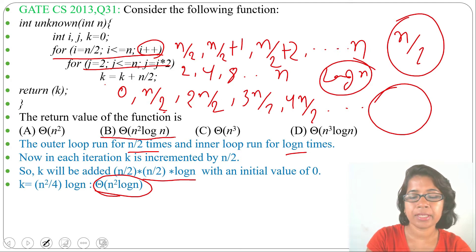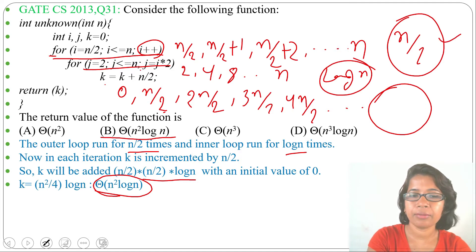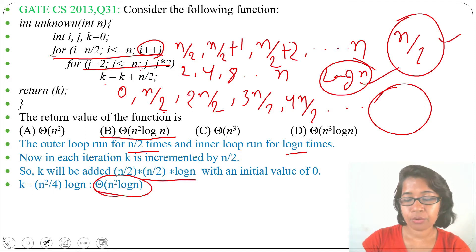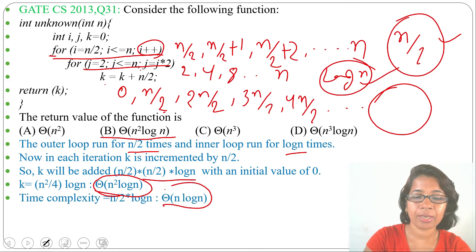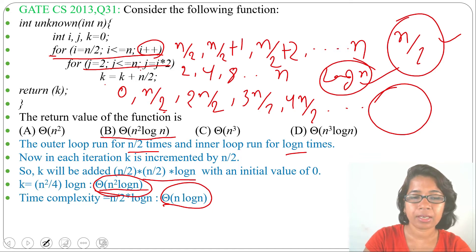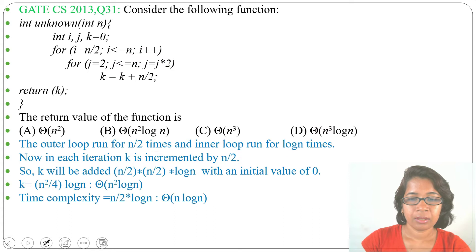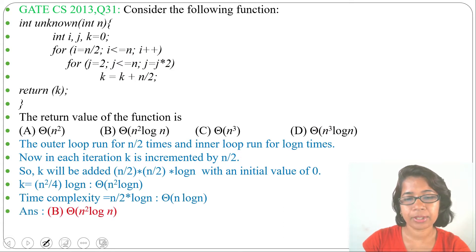Now let's check the time complexity for comparison. The outer loop runs n/2 times and the inner loop runs log n times, so the running time is (n/2) * log n, or Θ(n log n). However, the return value of k is Θ(n² log n). Both are different — the question is not asking for running time, it is asking for the return value of the function, which is Θ(n² log n). The answer is option B.